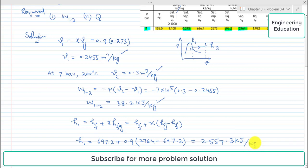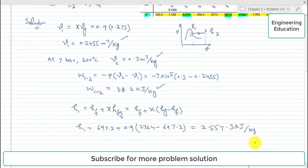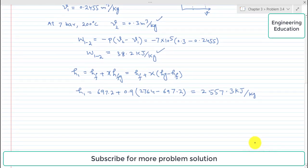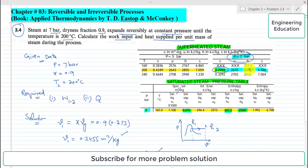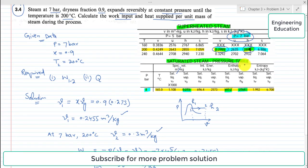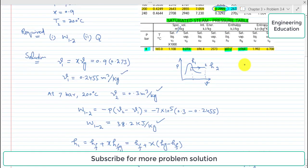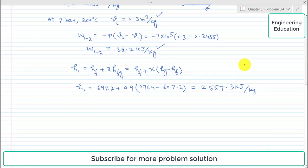Also, to find the value of h2, visiting the superheated tables, the value of h is 2846 kilojoules per kilogram. So the value of h2 from the superheated steam tables is 2846 kilojoules per kilogram. This is the value at 7 bar and 200 degrees Celsius.